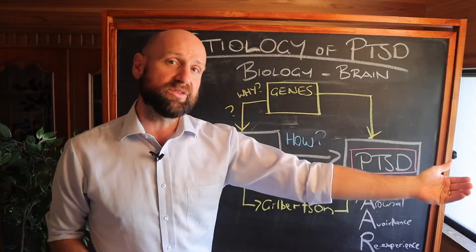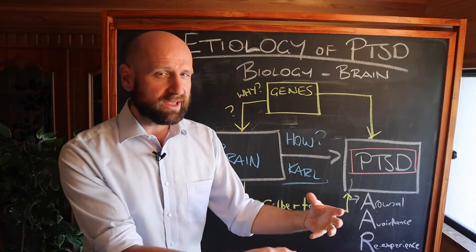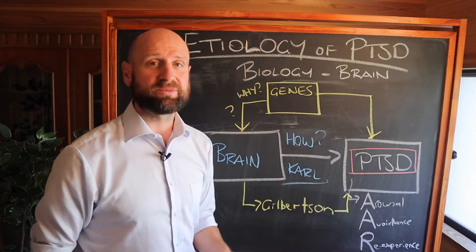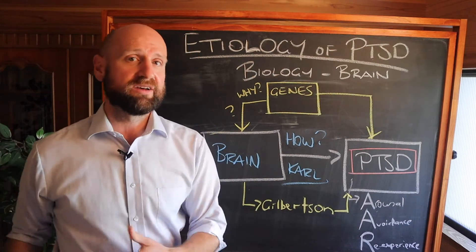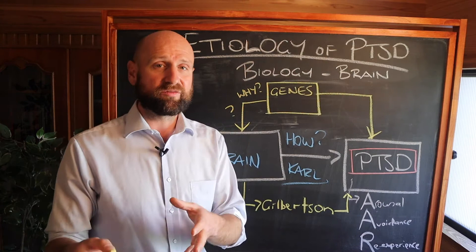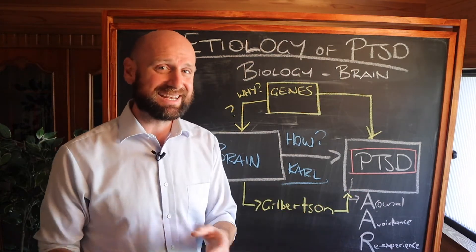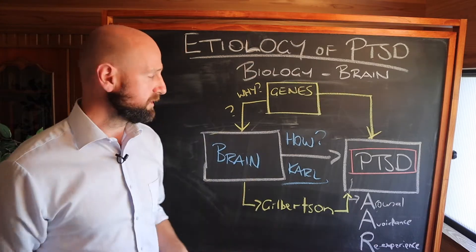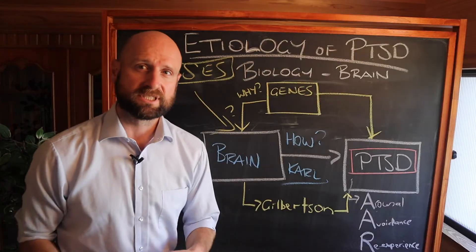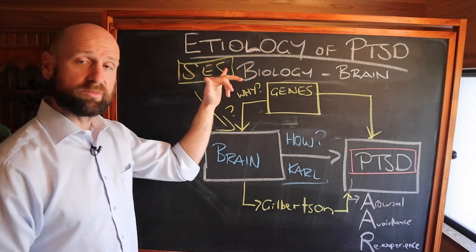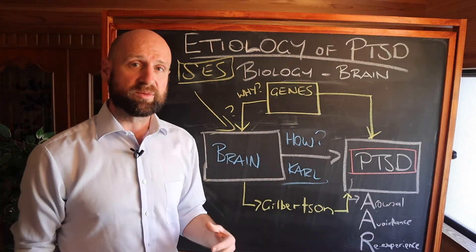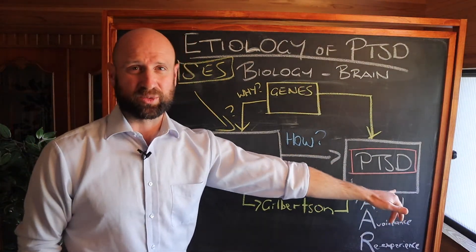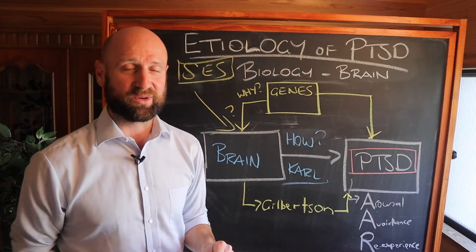You can go even further and ask: are genes the only explanation for why people might have smaller hippocampal volume? What about socioeconomic status? Drawing on knowledge from other areas of the course, people from lower socioeconomic backgrounds tend to have smaller hippocampi — that correlational finding has been shown in Luby. Socioeconomic status has been linked with lower brain volume, and people from lower socioeconomic status groups are also more at risk for PTSD. That's really important to mention in your essay.